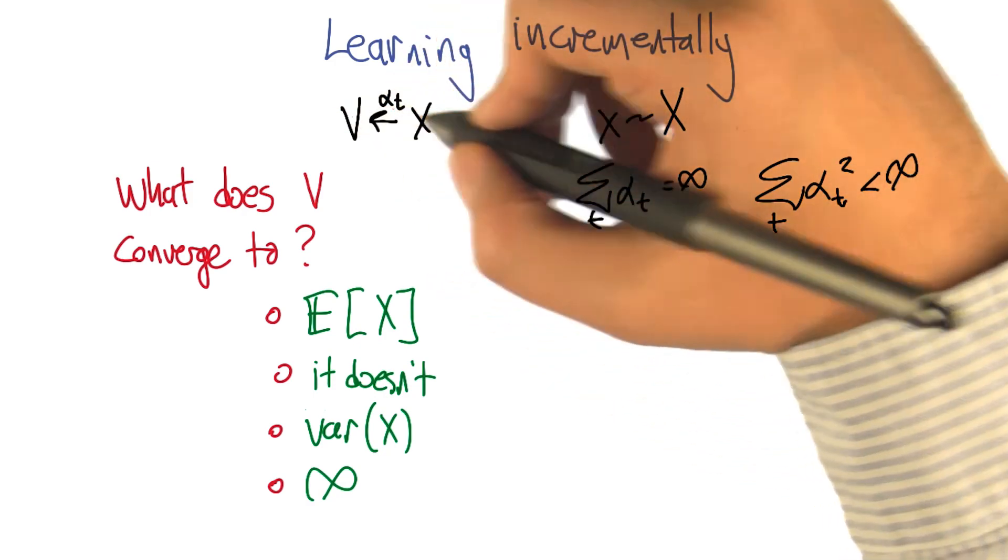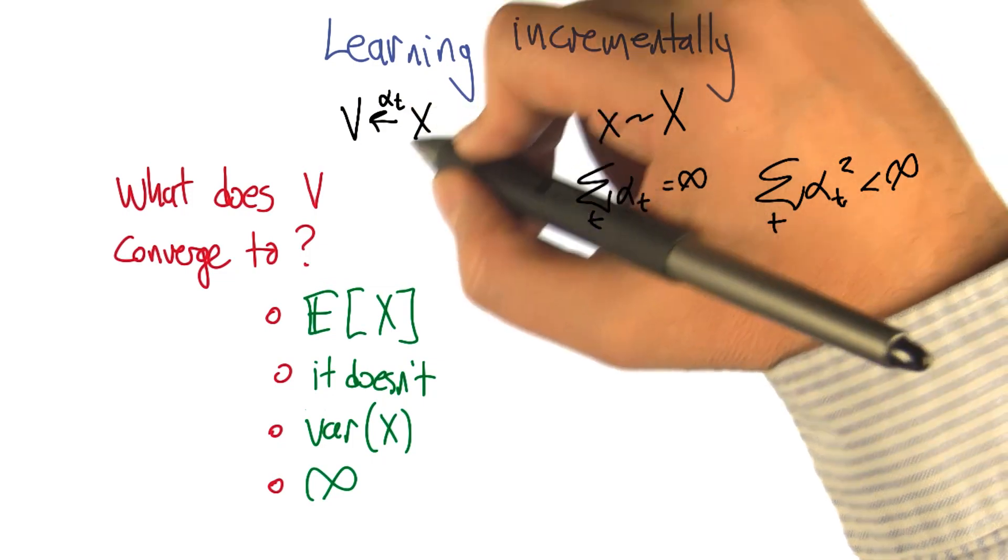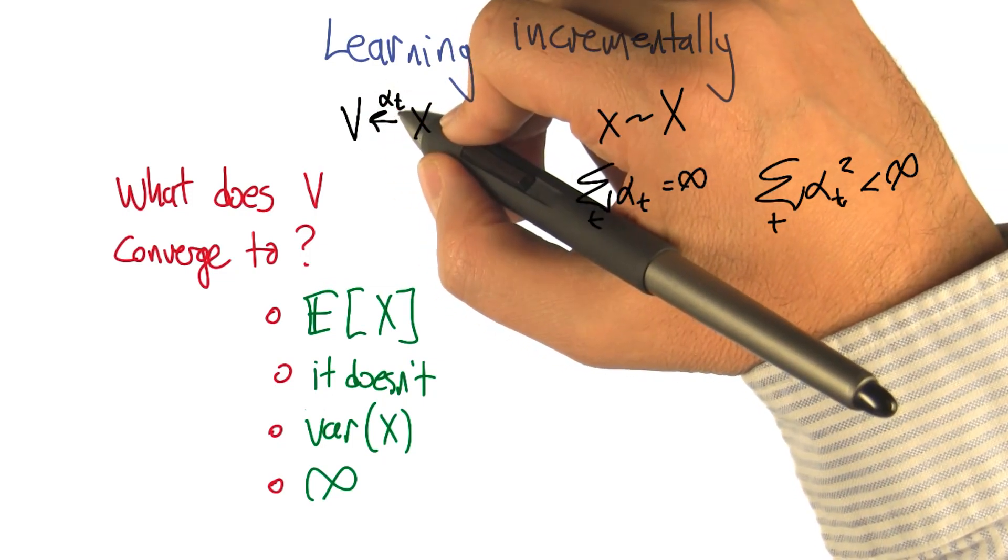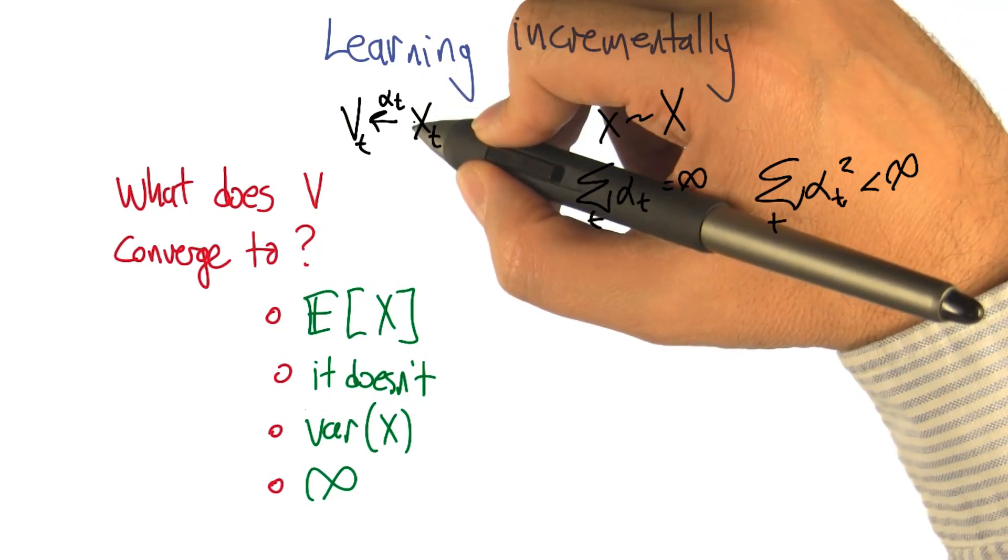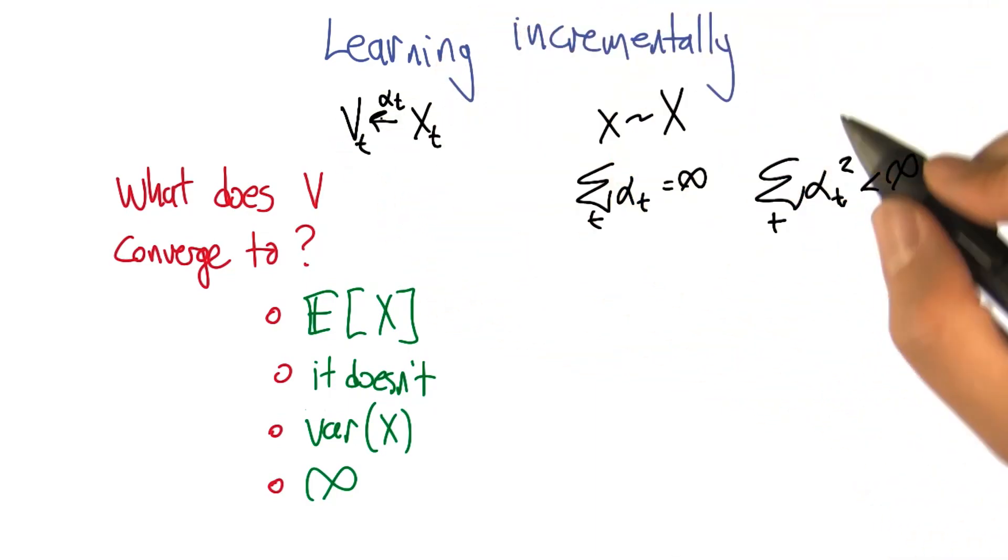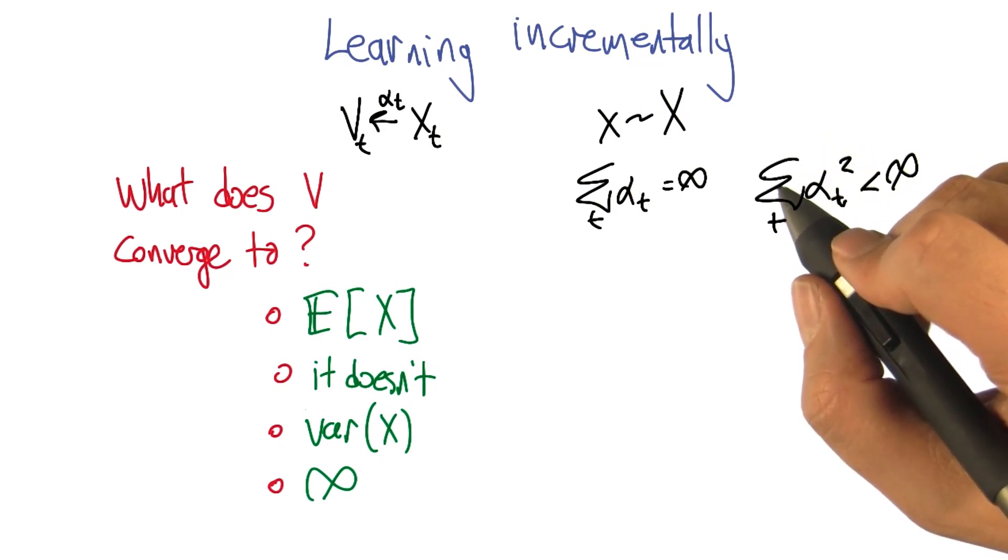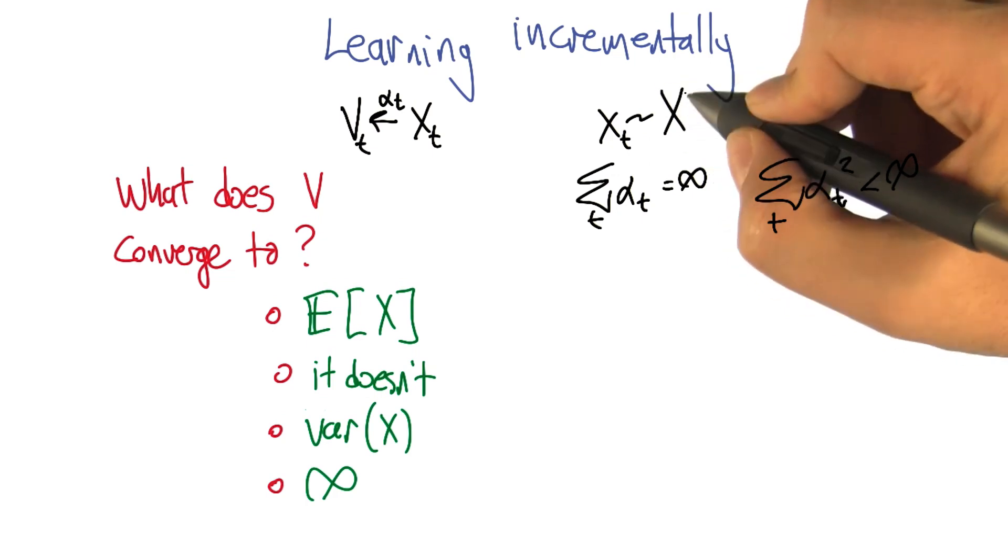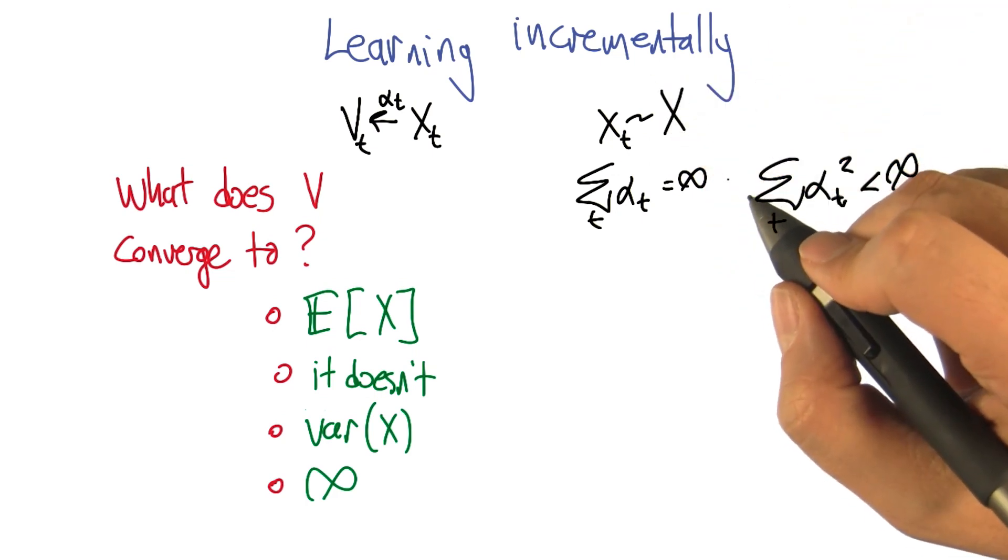So let's imagine that we've got some variable v and some sequence of values x and a sequence of learning rates alpha sub t. So we're going to draw a series of these x values and use them to update the v values. And the learning rate is changing over time. First of all, x sub t is going to be drawn from the distribution of some random variable big X.